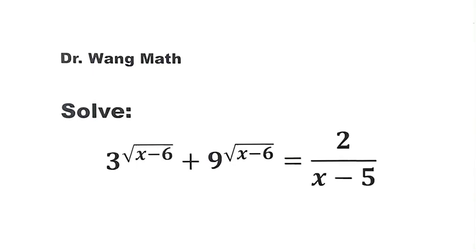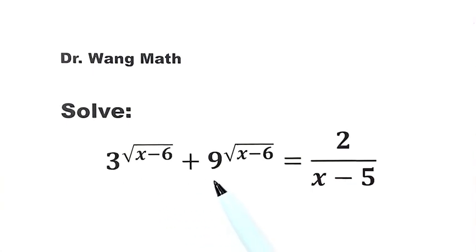In this video, we're going to solve this equation: 3 to the power of square root of (x minus 6), plus 9 to the power of square root of (x minus 6), equals 2 over (x minus 5).